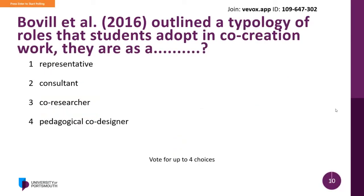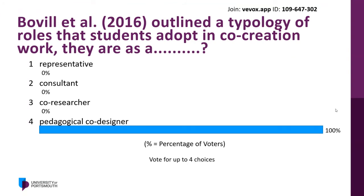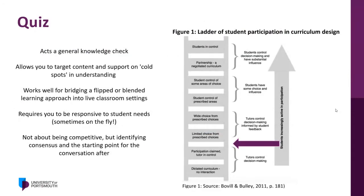Back to Vevox — if you've still got the app open, it's a 10-second timer on this one. The question is: Bovill and Bulley and colleagues outlined a typology of roles that students adopt in co-creation — what are they? You can select up to four answers. The answer is all of them — all options were correct. Ten seconds wasn't quite long enough, which is a good reminder that when designing activities, what seems like a quick timer may not be in practice.